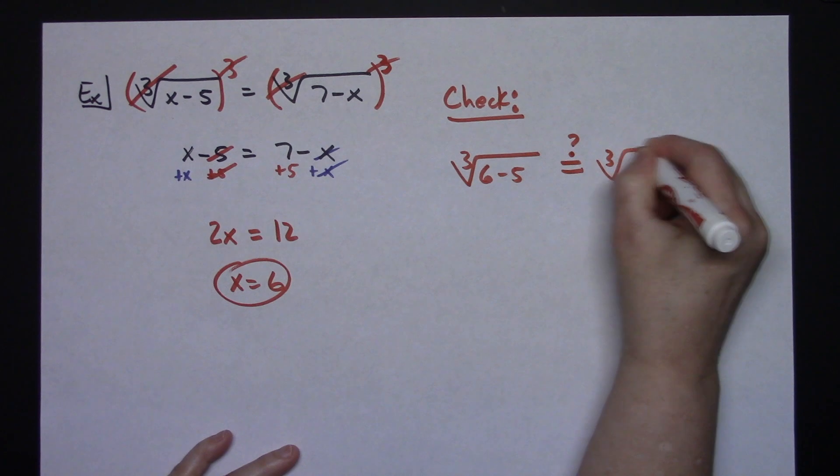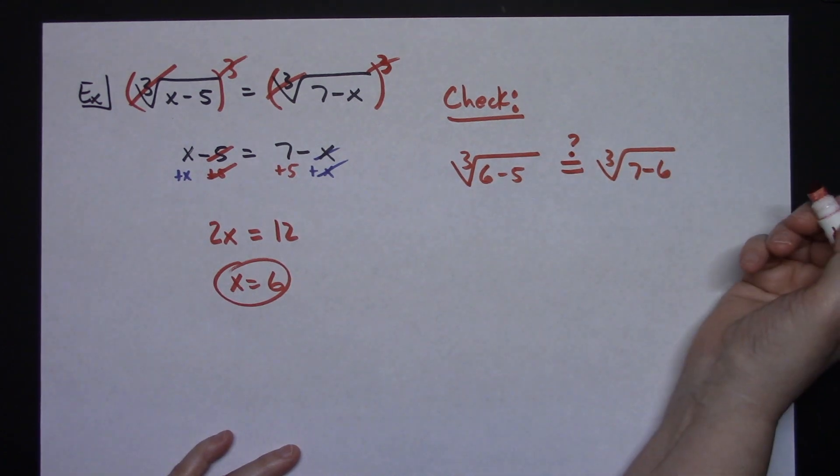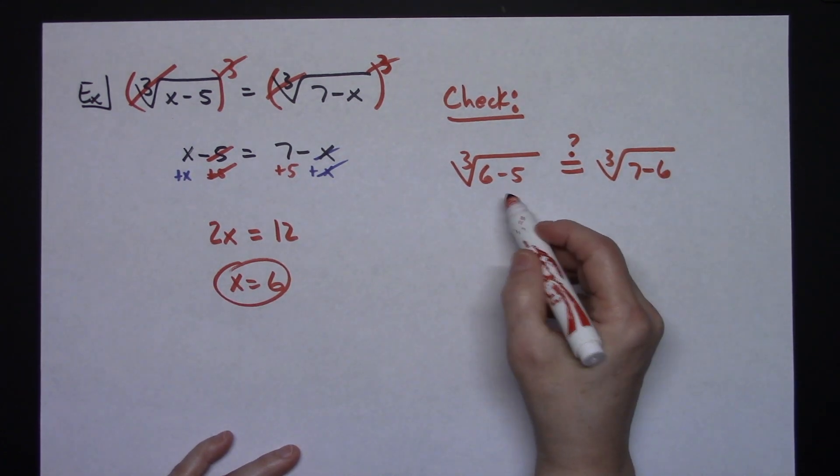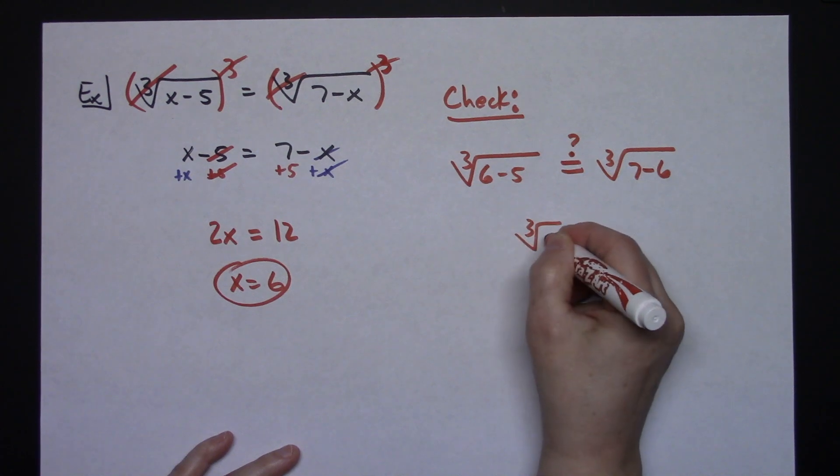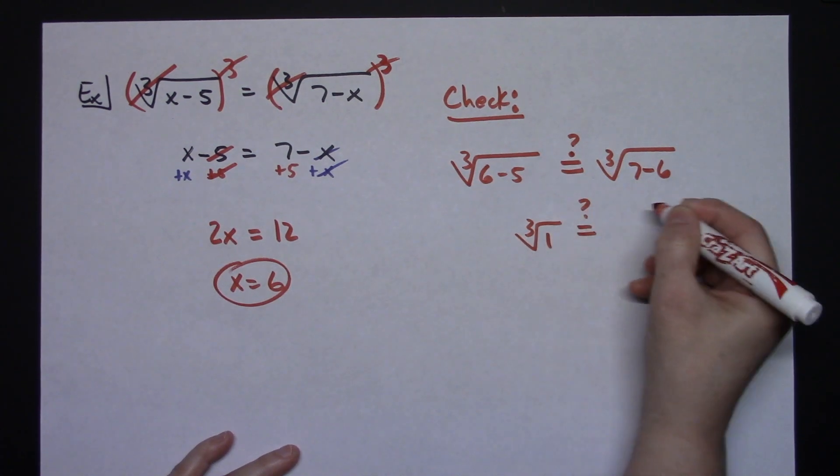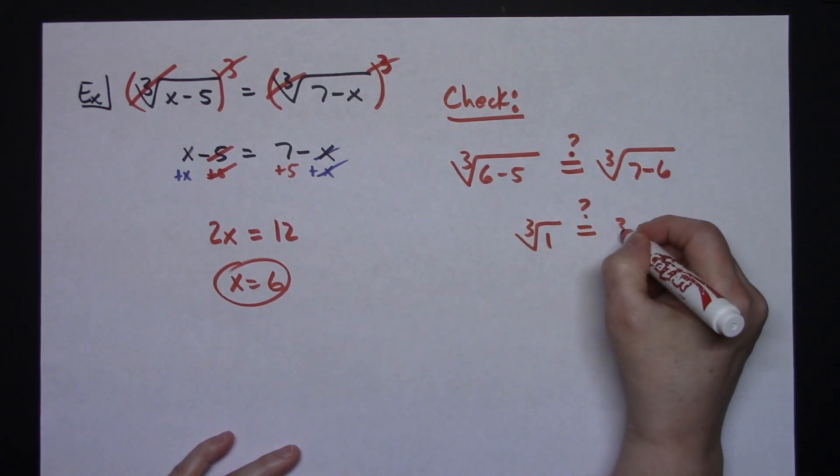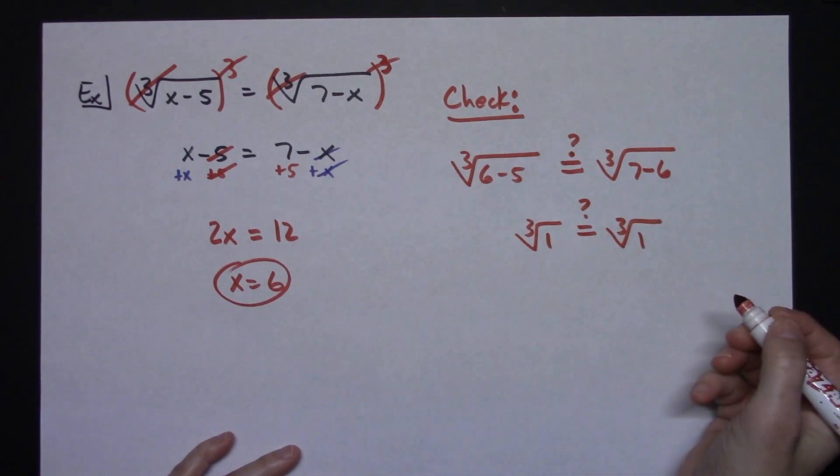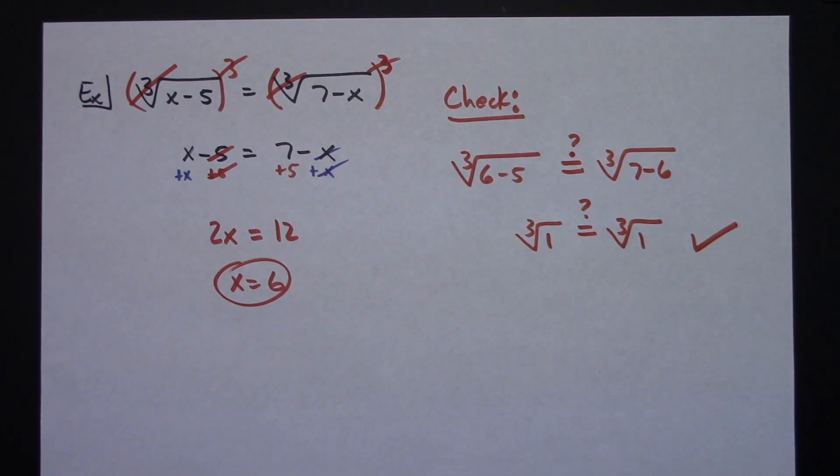...that equal to the cube root of 7 minus 6? Doing the math underneath here, this is going to be 1, so I'll have the cube root of 1. And then 7 minus 6 will give me 1 on that side—cube root of 1 is 1. So 1 equals 1—yes, it does check.